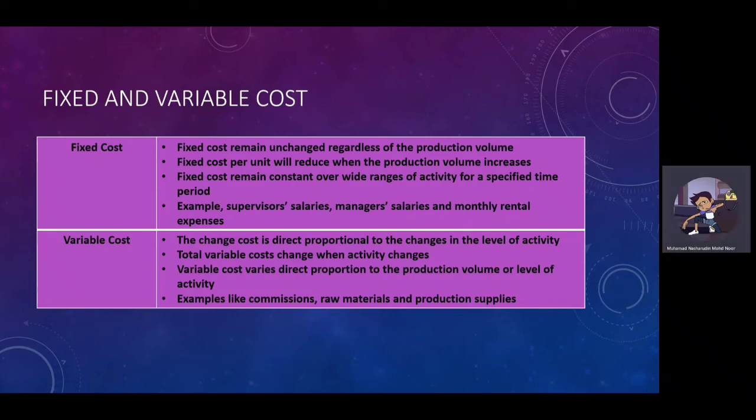For Variable Costs, the change in cost is directly proportional to the change in the level of activity. Total variable costs change when activity changes, and variable costs vary in direct proportion to the production volume or level of activity. Examples include commissions, materials, and production supplies.